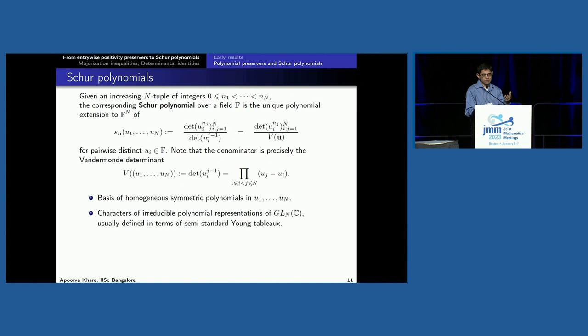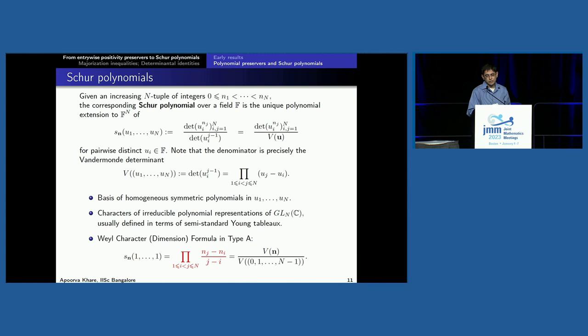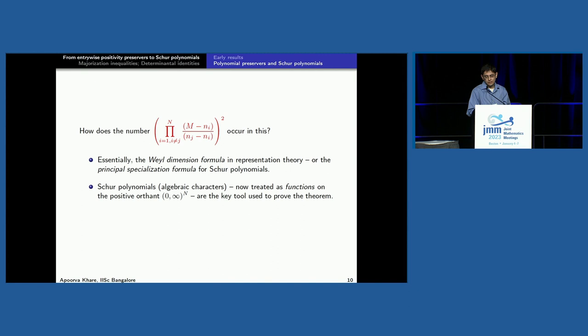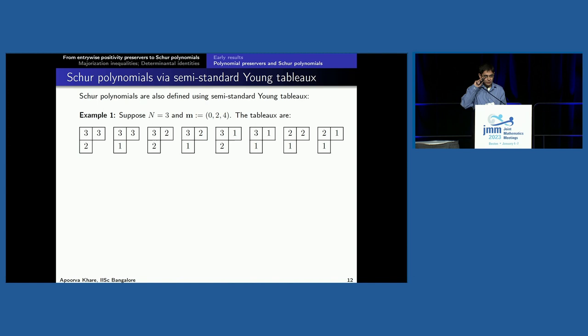The Vandermonde determinant is the Weyl denominator, and the numerator is an alternating sum. Usually one defines Schur polynomials in terms of semi-standard Young tableaux, on the next slide. If you specialize all variables to 1, you get exactly the expression ∏(n_j − n_i). So if I take a ratio of two such specializations, I get exactly the quantity inside the big parentheses. This number occurs because it's a ratio of two specializations of Schur polynomials.